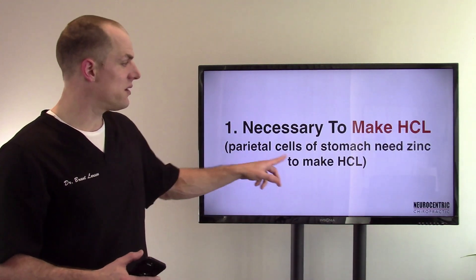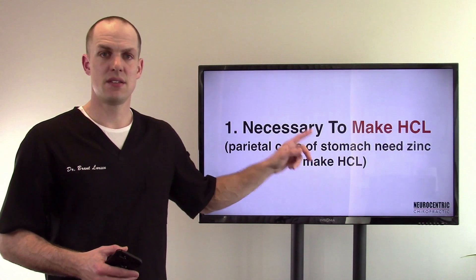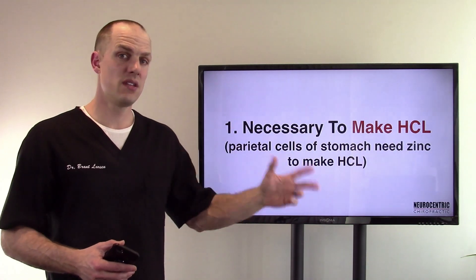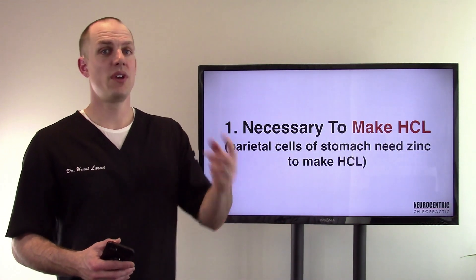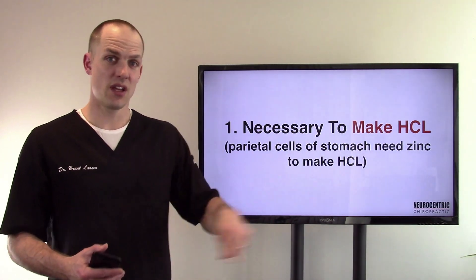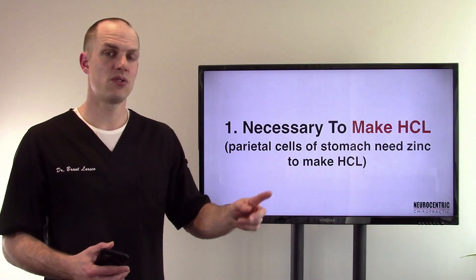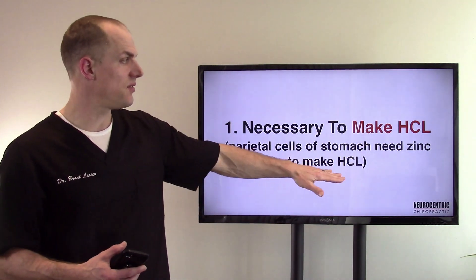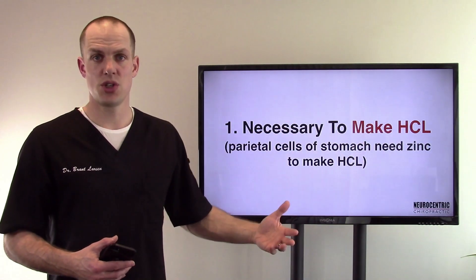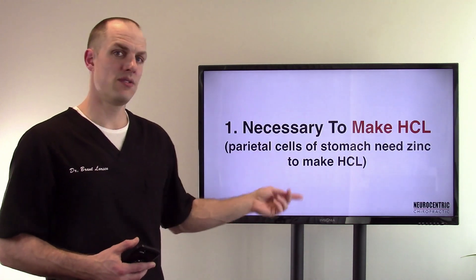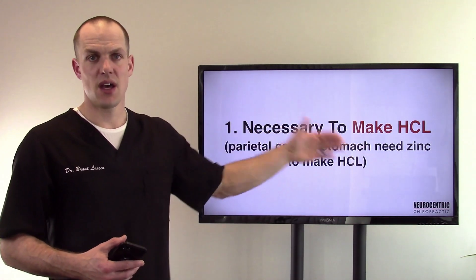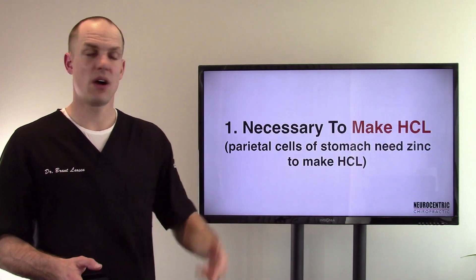Your parietal cells of the stomach need zinc to make hydrochloric acid. So you need zinc to make the acid to help you digest better and to help you absorb the zinc. You could be having digestive issues and not absorb zinc how you should, or you could have not enough zinc to make enough hydrochloric acid. It goes round and round.